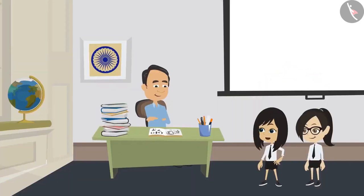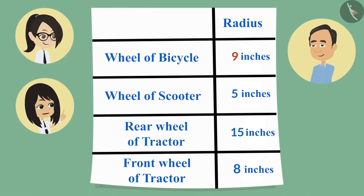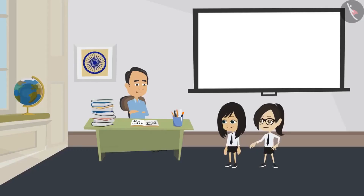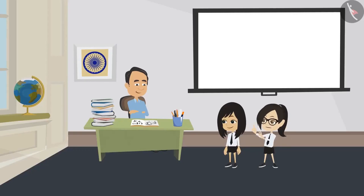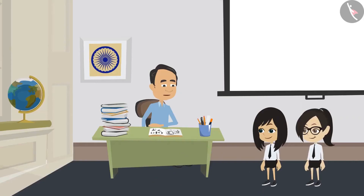Now I can tell whether the front wheel of the tractor is bigger or the wheel of the bicycle. The wheel of a bicycle is bigger because its radius is 9 inches, which is more than the radius of the front wheel of the tractor, which is 8 inches. This means when we know the radius or diameter of a circle, we can tell whether it is big or small without looking at the circle. Yes, absolutely correct.